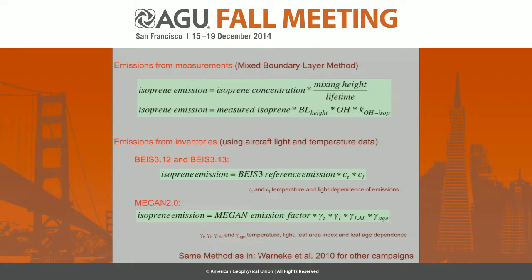Here is how the emissions are estimated. The mixed boundary layer method assumes that isoprene emitted mixes out throughout the boundary layer, and the mixing ratio measured by the aircraft is dependent on its lifetime. What you need to know is the isoprene measured, the boundary layer height as the mixing volume, and the OH concentration representing the lifetime. For the emissions inventory, as Luisa explained, you need base emissions and then the meteorological light and temperature dependence, which applies to both BEIS and MEGAN. Aircraft data is used as input for this.